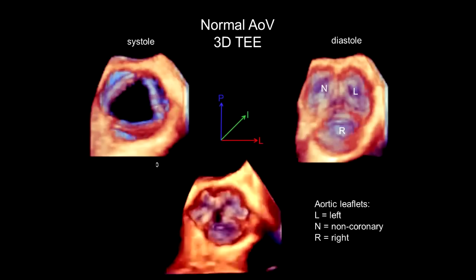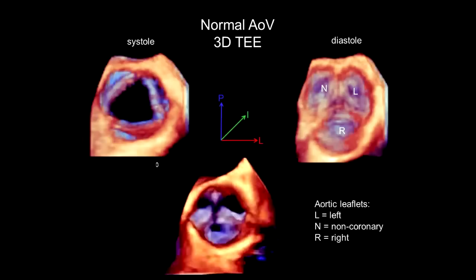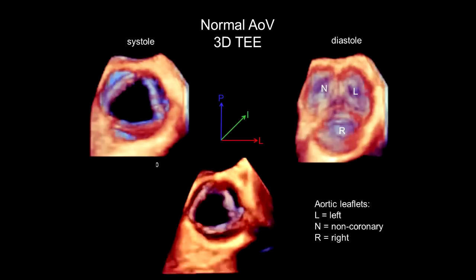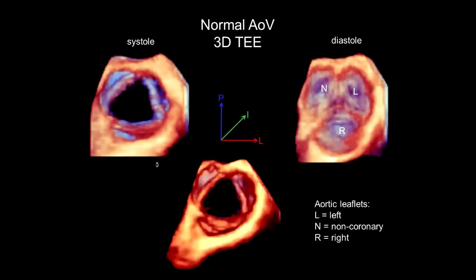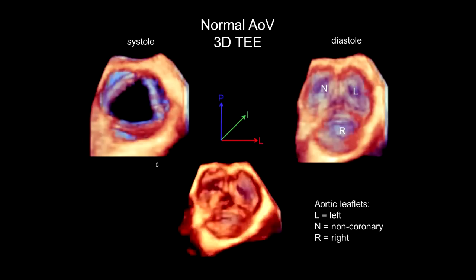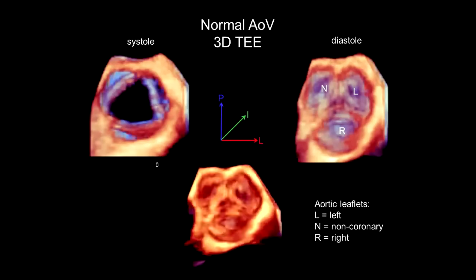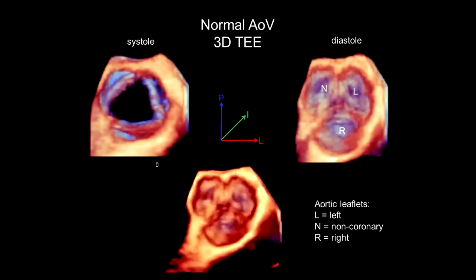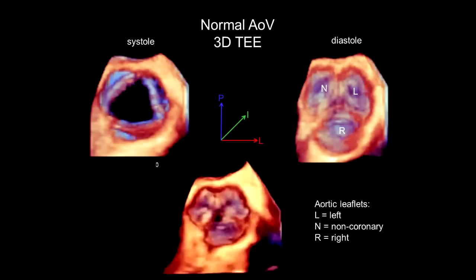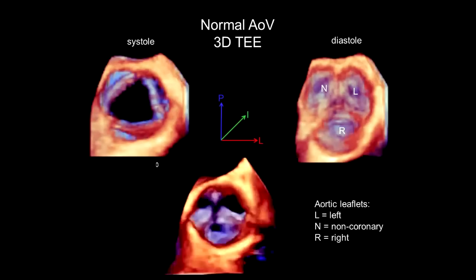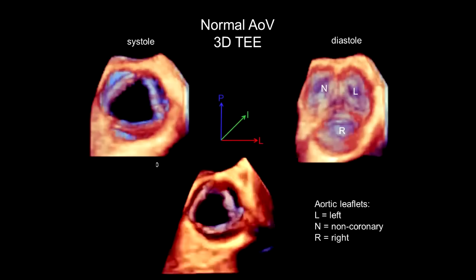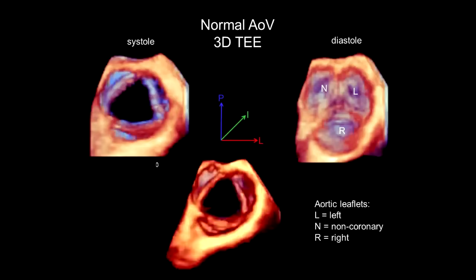Here's a nice example of a 3D TEE of an aortic valve — right off the machine with no post-processing. To get a picture like this with Live 3D, all you need is the mid-esophagus transesophageal view, dial in your aortic valve short axis 2D view between 30 and 60 degrees, optimize your 2D view, then launch Live 3D and adjust your sample volume size and position. You should be able to get beautiful views of the aortic valve like this, especially on 3D TEE.